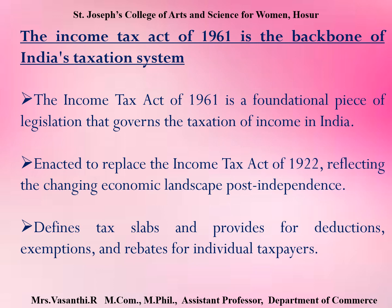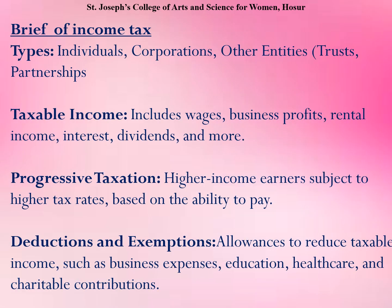A brief overview of income tax: the types of persons covered include individuals, corporations, and other entities like trusts and partnerships. Taxable incomes include wages, business profits, rental income, interest, dividends, and more. Progressive taxation means higher income earners pay a higher tax rate, based on ability to pay. Deductions and allowances are given to individuals for business expenses, education, healthcare, and charitable contributions.